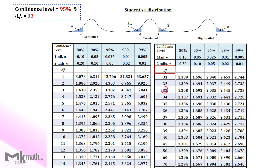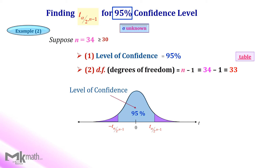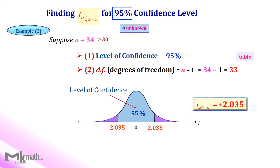First, locate 33 degrees of freedom. Then select the 95% confidence level from the top row. Then read the intersection of those to get the t-score as 2.035. We found the positive critical value 2.035. We should also have the negative critical value minus 2.035. So the t-critical values are plus or minus 2.035 for the 95% confidence level with a sample size of 34.